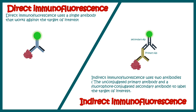In direct immunofluorescence, a single antibody is used which detects the target. In indirect immunofluorescence, two antibodies are used — one unconjugated primary antibody and a conjugated secondary antibody. Very often the unconjugated antibody comes from patient samples.